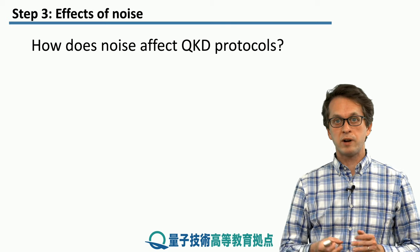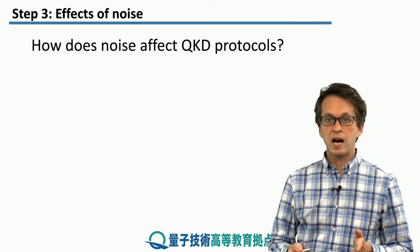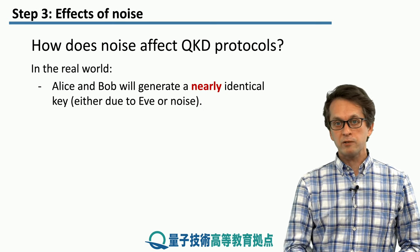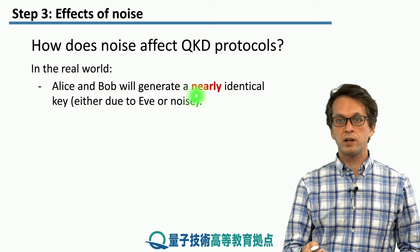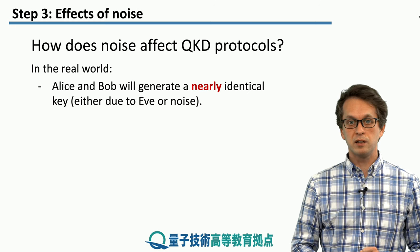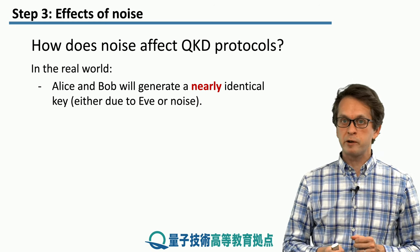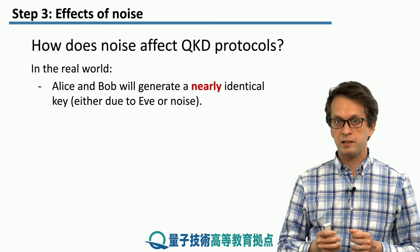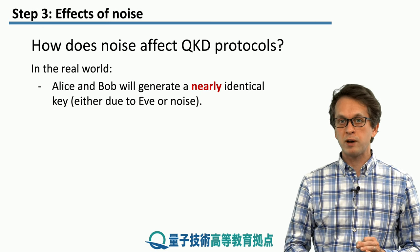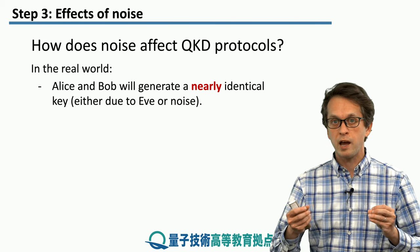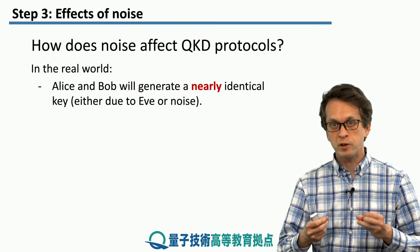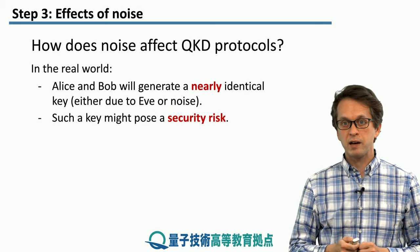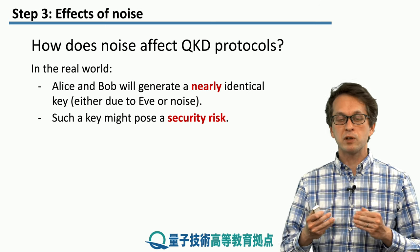So far we have considered an ideal case with no noise. But in real life, noise affects QKD protocols. Alice and Bob will not be able to generate a perfectly correlated key — noise or eavesdropping introduces inconsistencies, making the key only nearly identical. Even without active eavesdropping, inherent system noise means the keys will not be perfectly correlated. Alice and Bob must therefore decide on an acceptable security risk.